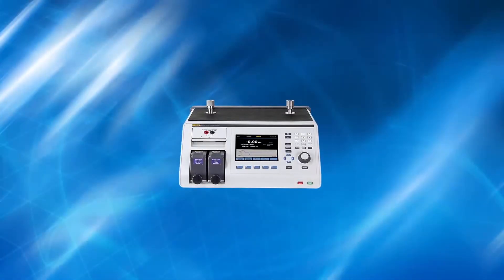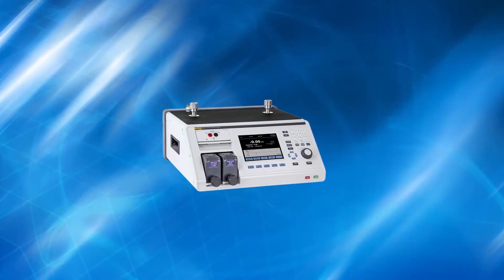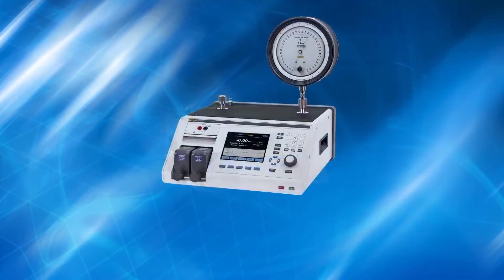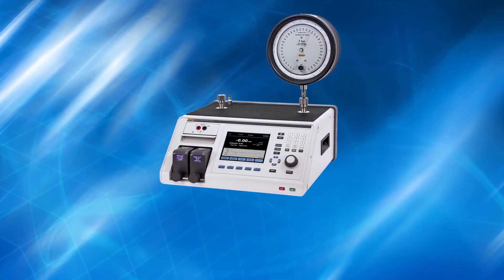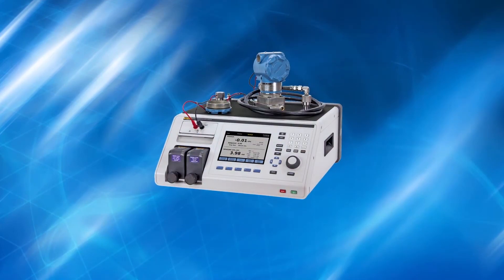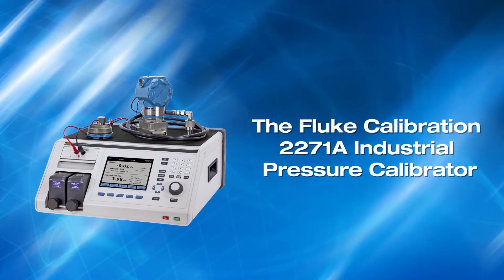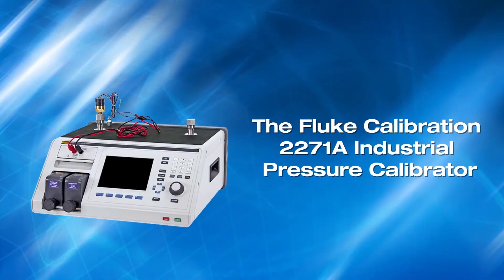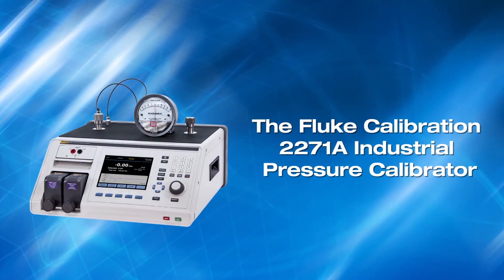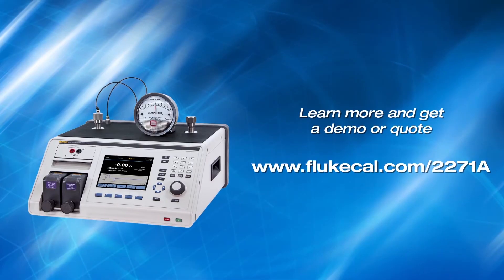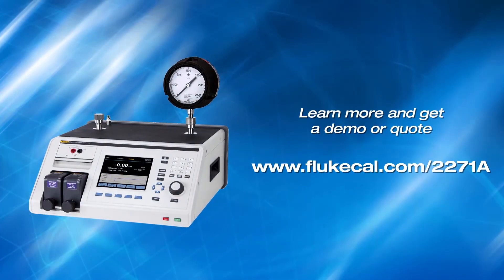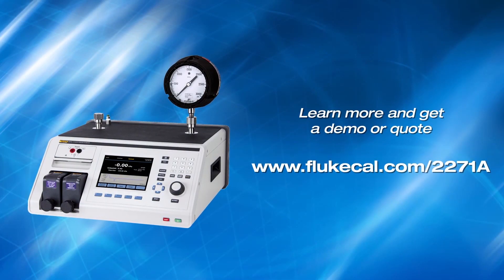Simple setup and simple usage is the key to efficient calibration and testing of pressure gauges, transmitters, and switches. The Fluke Calibration 2271A Industrial Pressure Calibrator is the complete solution. For more information, visit FlukeCal.com. Thank you.